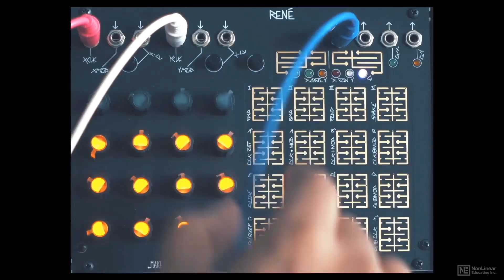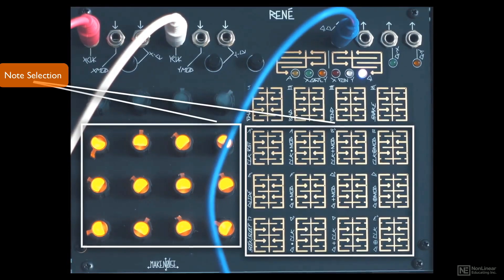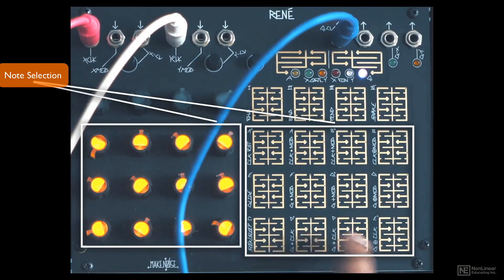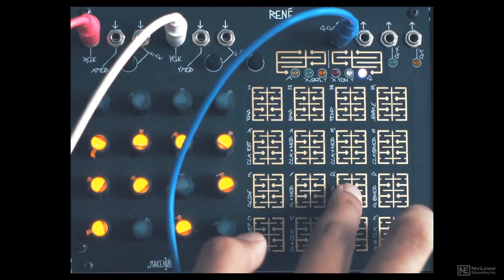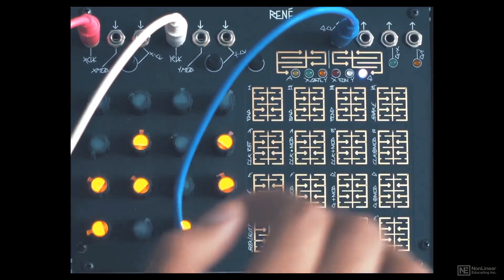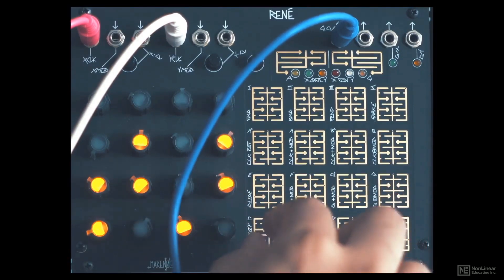Now going back to that Q page, here we can limit notes to specific scales. Each touchplate, except for the top row, represents a note from the chromatic scale starting from C. So I can turn off specific notes, and now the quantized CV output is going to be limited to only the notes I left on.